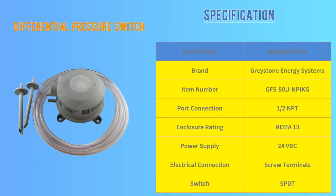Fifth, differential pressure switch, also called DPS. This is a product of Greystone. This field device is used for sensing pressure or sensing airflow. When there is no flow, it will give a dry contact signal to the controller and the equipment will stop immediately.